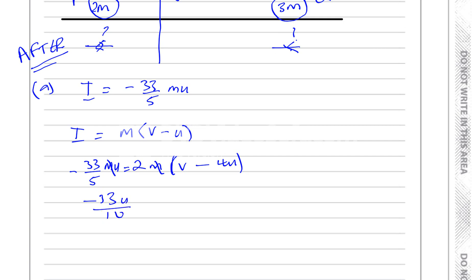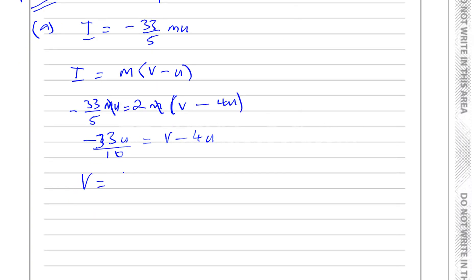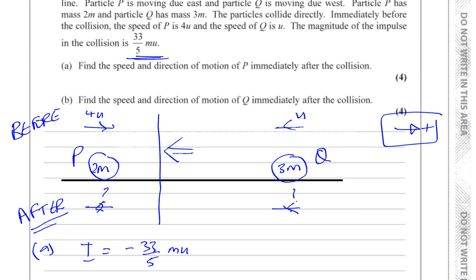So expanding the bracket, now I can say V is equal to 4u minus 33u over 10. That's 40 over 10 minus 33 over 10. 40 minus 33 is 7, so it's 7u over 10. So V equals 7u over 10 meters per second is the velocity of P after the collision. That's what we used.